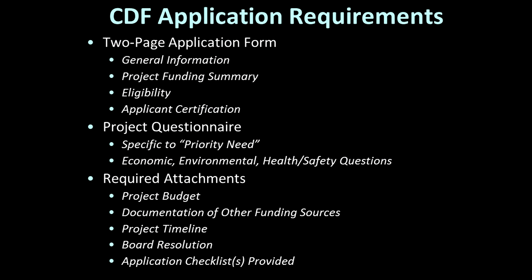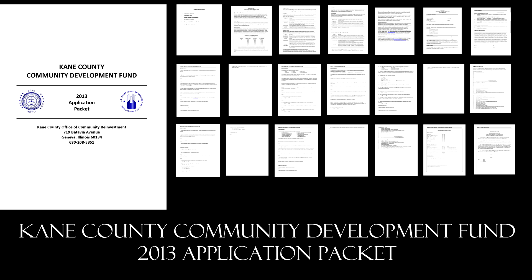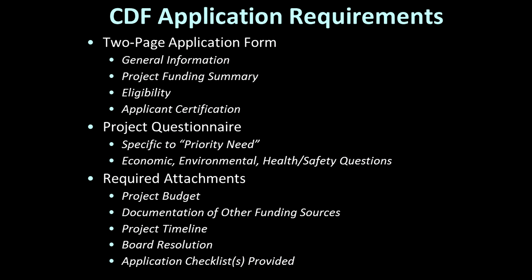To apply for community development funds, you will need to complete a couple of standardized forms and attach information specific to your project. Our application packet is a fillable Microsoft Word document you can download from the Community Reinvestment page on the county's website. When you click on the packet, you'll be asked to enter a user name and password — instead, just click the cancel button twice and the Word document will automatically open on your computer. Please let us know if you have any difficulty with this; we're happy to provide the application to you on a flash drive. Once you have the application packet, you should begin by completing our standard two-page application form.